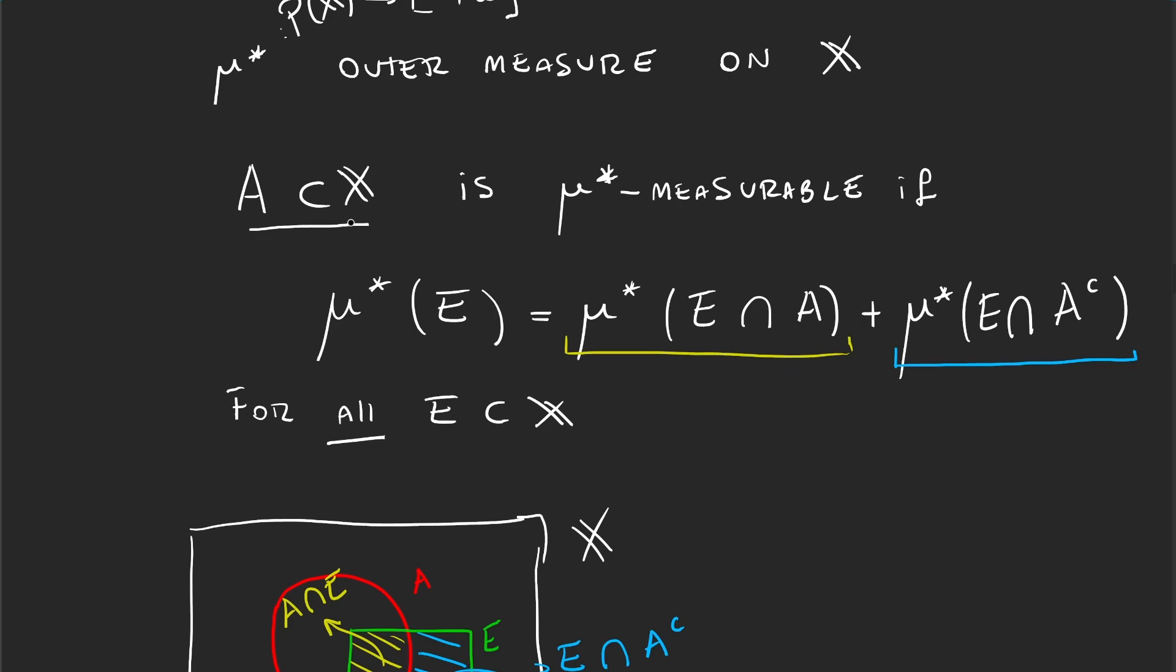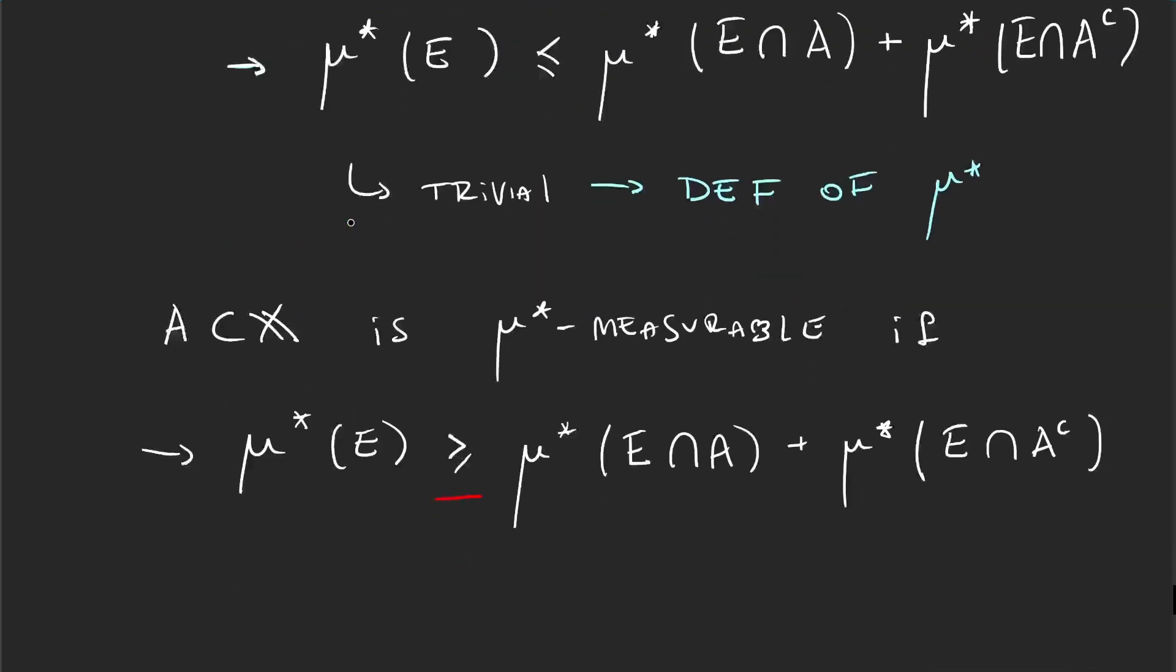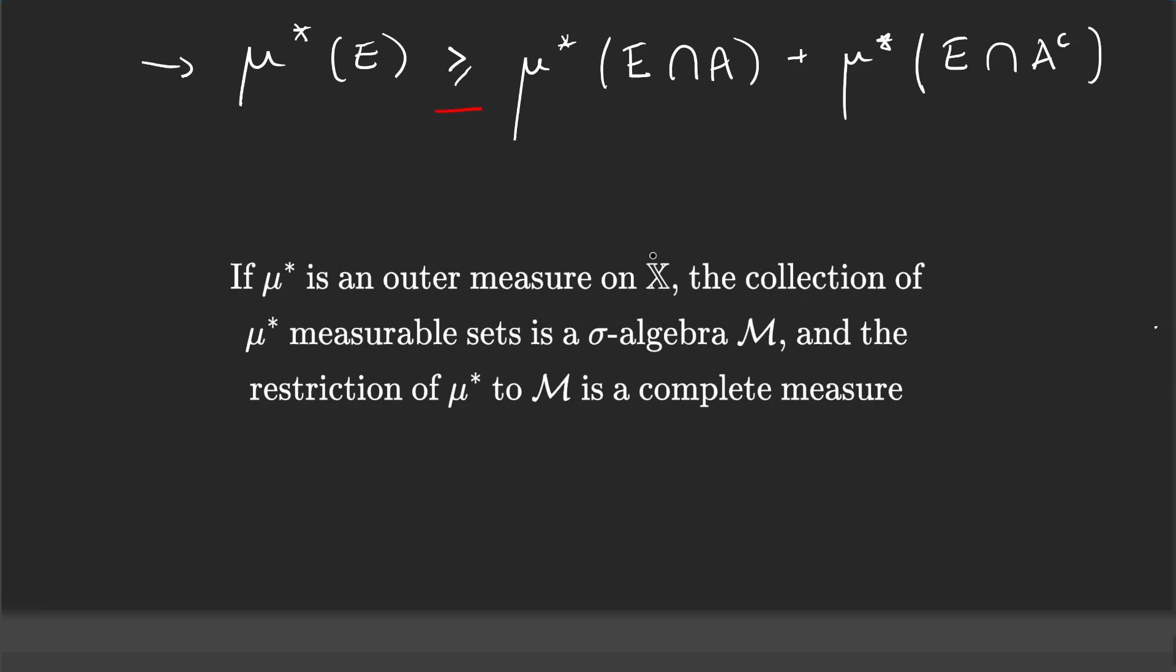Okay, so now that we have the concept of measurable, let's have a look at Carathéodory's theorem. This is Carathéodory's theorem. It's the theorem we have been waiting for since we started seeing problems with the definition of a measure.